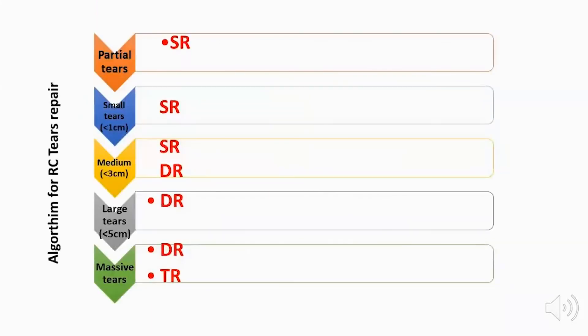This algorithm guides rotator cuff repair selection. For partial tears, a single row is used. For small tears (less than 1 cm), a single row as well. For medium tears (1–3 cm), single or double row can work well. For large tears (up to 5 cm), a double row is preferred. For massive tears (more than 5 cm), a double row or triple row is used.